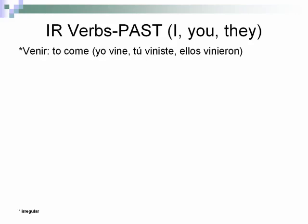Venir, to come: yo vine, tú viniste, ellos vinieron. As you can see, it has an asterisk meaning it's an irregular verb — it's not going to follow the standard conjugation you just went through. These you just have to memorize.